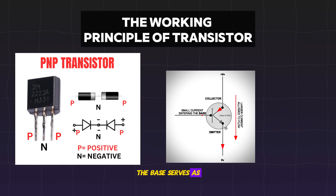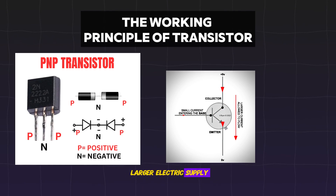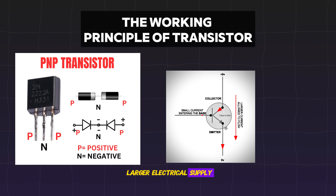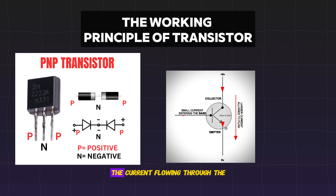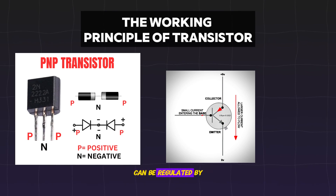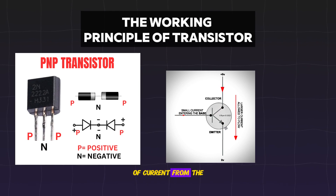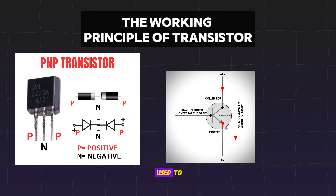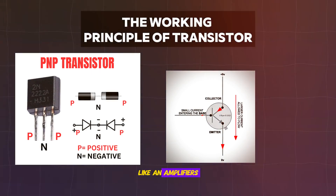The base serves as a gate controller device for a larger electric supply. The collector is the larger electrical supply, and the outlet of that supply is the emitter. The current flowing through the gate from the collector can be regulated by sending varying levels of current from the base. In this manner, a very small amount of current can be used to control a large amount of current, like in amplifiers.